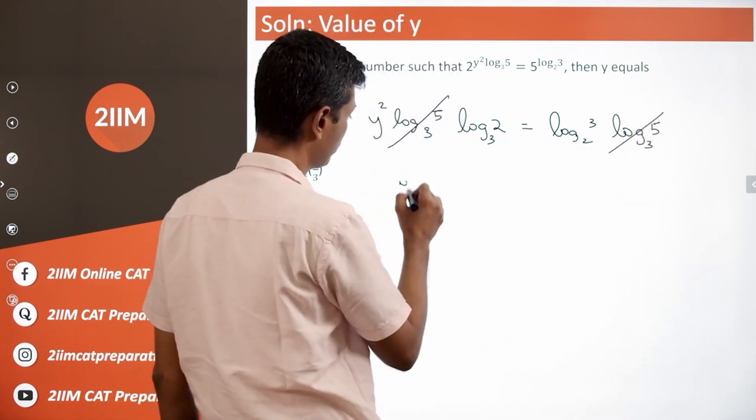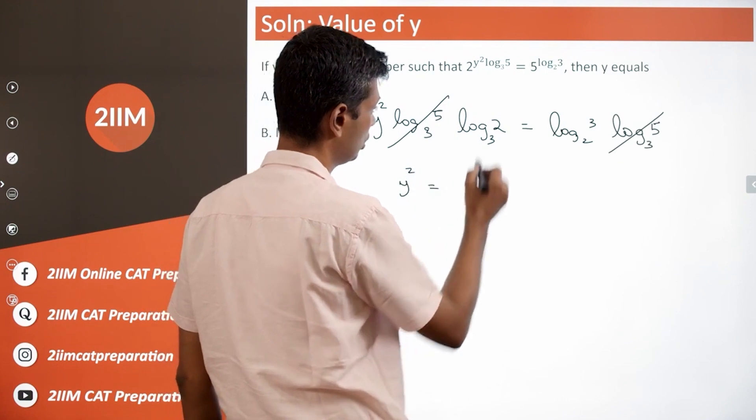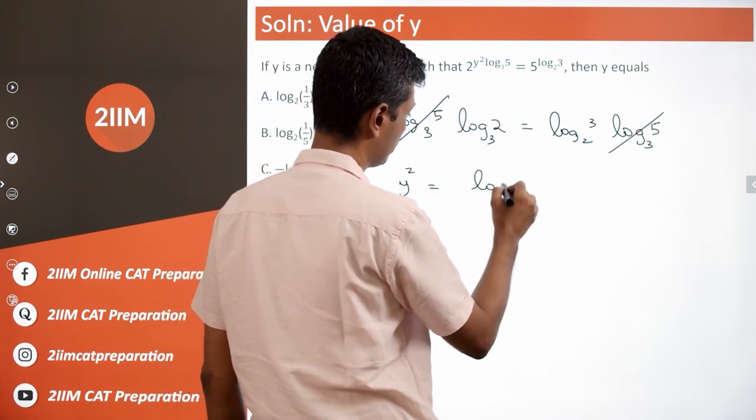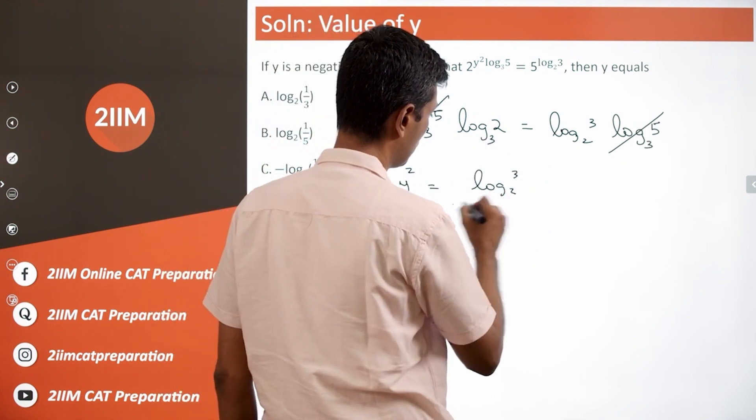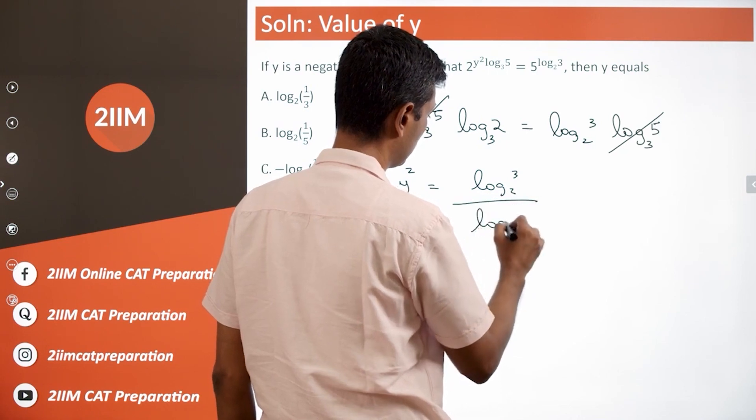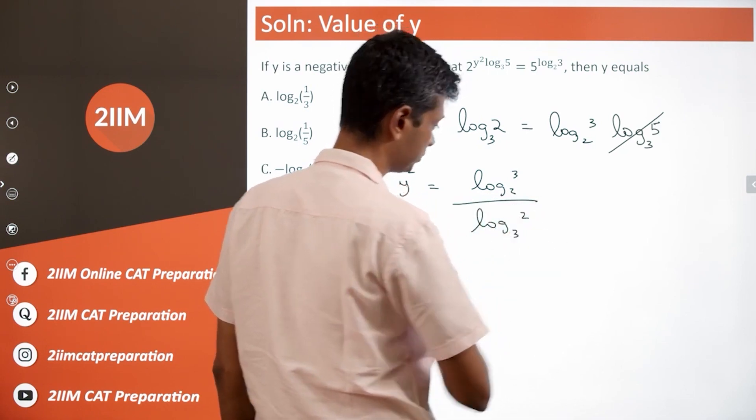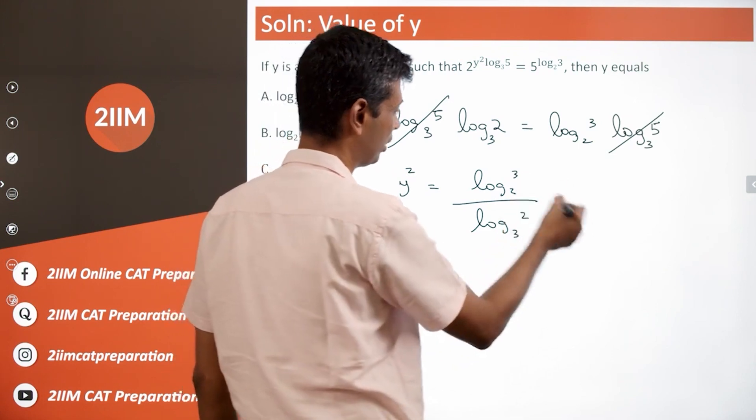So we have y square here equal to log 3 to the base 2 by log 2 to the base 3. Log 2 to the base 3 is 1 by log 3 to the base 2.